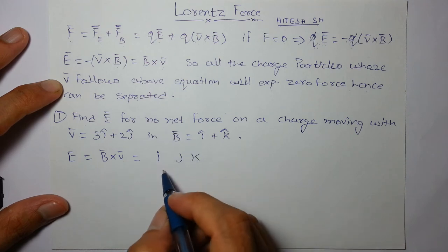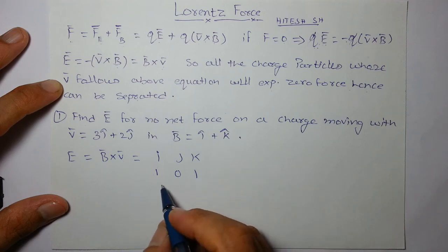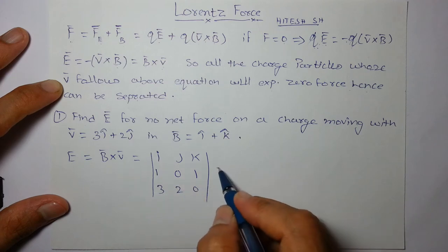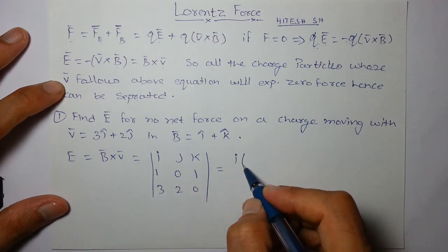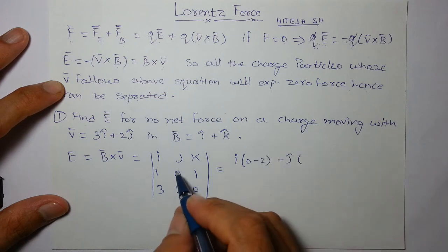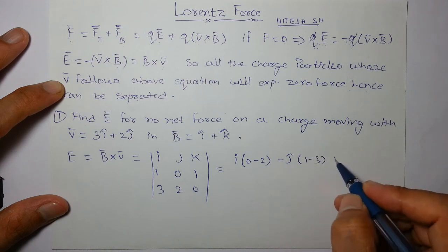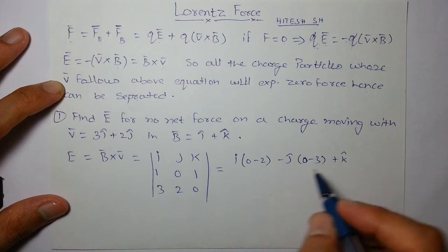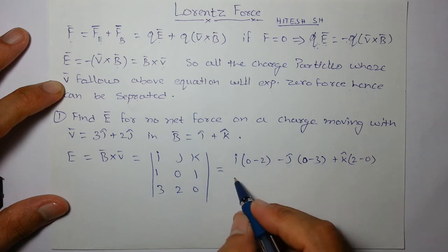Cross product I, J, K and B is 1, 0, 1 and velocity is 3, 2, 0. You can take the cross product. You must know how to take the cross product. But I component is 0 minus 2, J component is 1 minus 3, K component is 0 minus 3, K component is 2 minus 0.